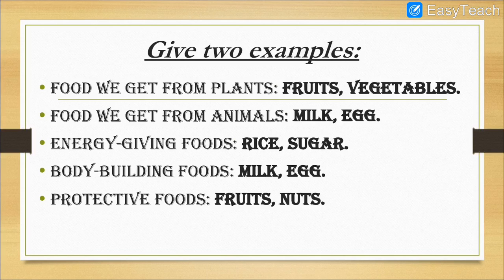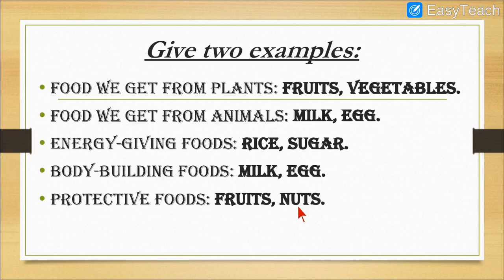After that we learned about examples. Number one: food we get from plants — fruits and vegetables. Food we get from animals — milk and egg. Energy giving food — rice and sugar. Body building food — milk and egg. Protective foods — fruits and nuts. How will you remember this? Fruit and Nut is also the name of a chocolate, so you can easily remember fruits and nuts are protective foods.